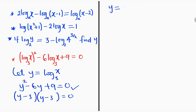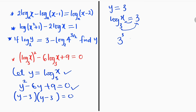If you set each factor equal to 0, in each case you get y is equal to positive 3. So y equals 3. But from our substitution, we defined y as equal to log of x base 3, which we can now substitute as 3. So log x base 3 is equal to 3. From the definition of logarithm, the base 3 raised to the power of 3 is equal to x. So 3 raised to the power of 3 is equal to x, and hence x is equal to 27. This is our final solution.